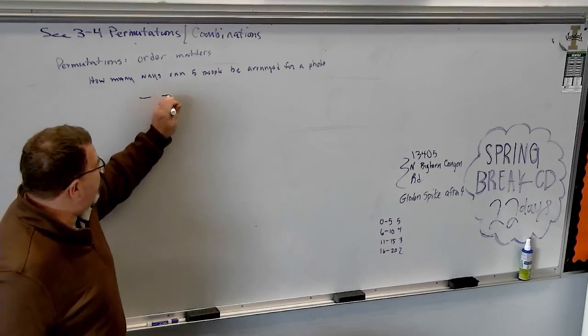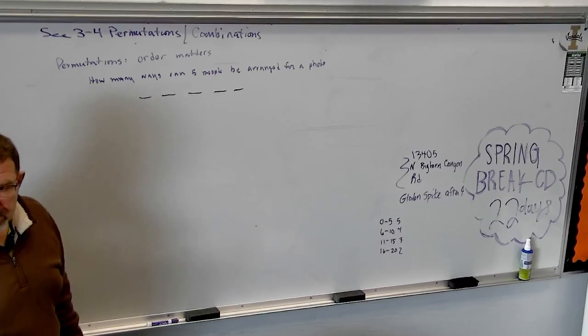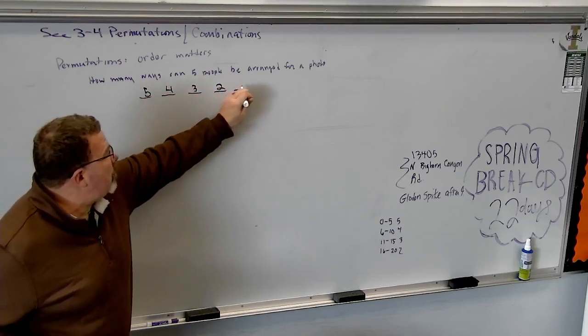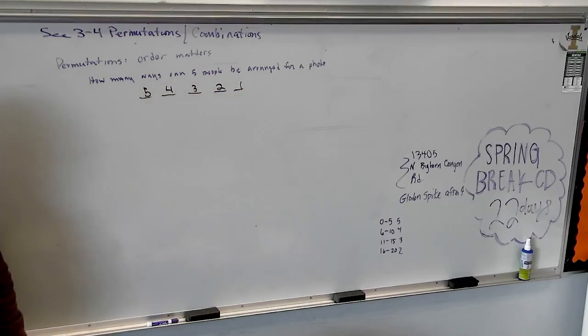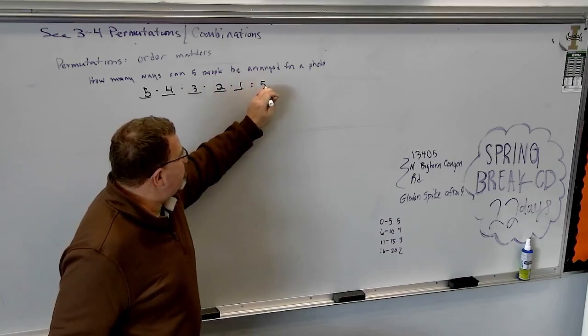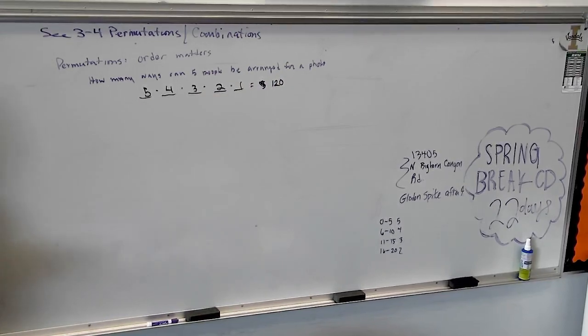I have five people, I want to put them in order. How many choices do I have for the first person? Five. And then what? Four. And I'm doing something more than once, what am I going to do with those numbers? I'm going to multiply. Anytime you do something more than once. Did I say the word or anywhere in this statement? If you don't see the word or, you're not adding.